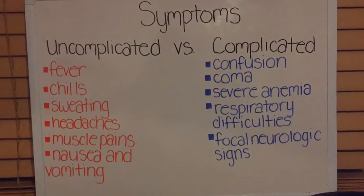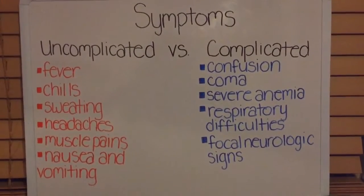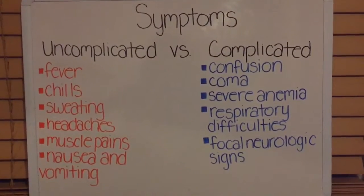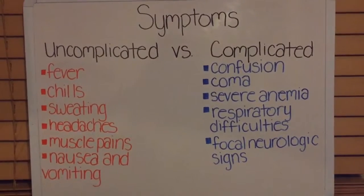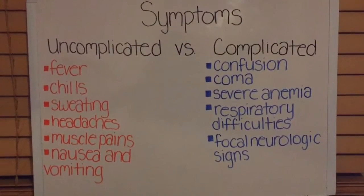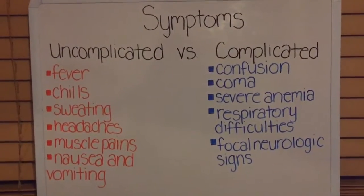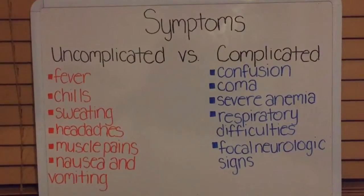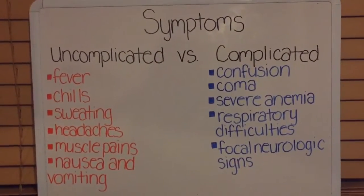Uncomplicated symptoms include fever, chills, sweating, headaches, muscle pains, nausea, and vomiting. Complicated symptoms include confusion, coma, severe anemia, respiratory difficulties, and focal neurologic signs. Plasmodium falciparum starts as uncomplicated symptoms, but without treatment it can become severe and result in death. When bitten by the infected mosquito and symptoms start to appear, it is important to seek treatment within the next 24 hours, or the symptoms can become very severe.